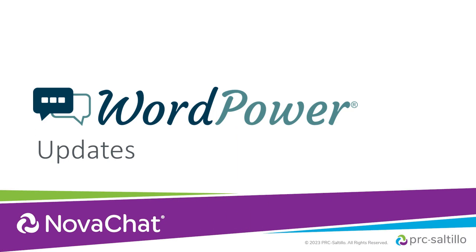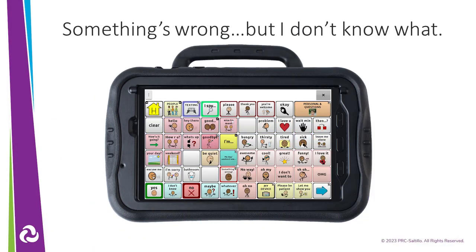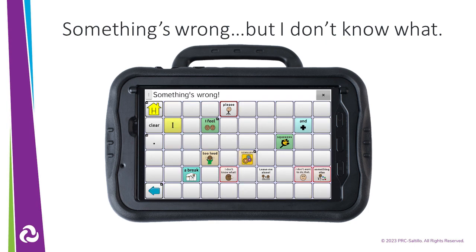The WordPower vocabulary files in chat software on the NovaChat have some new words available in Update 2.44. On the social page, when you say "Something's wrong," you will now have the choice of saying "But I don't know what," giving your AAC learner more options to discuss their needs with you.